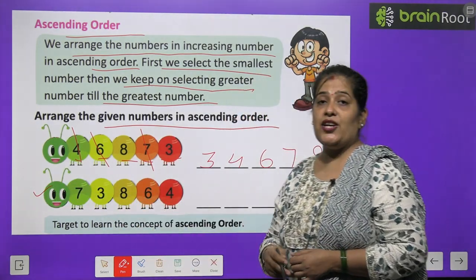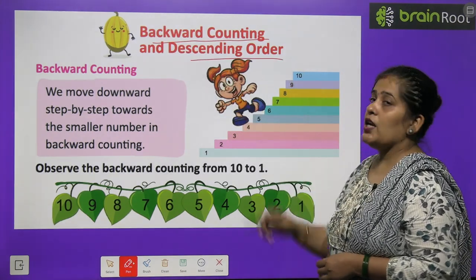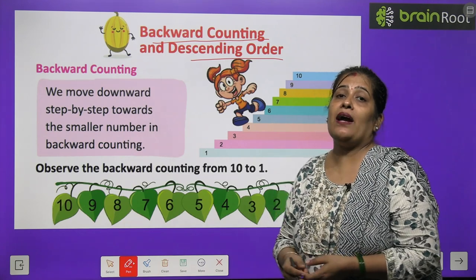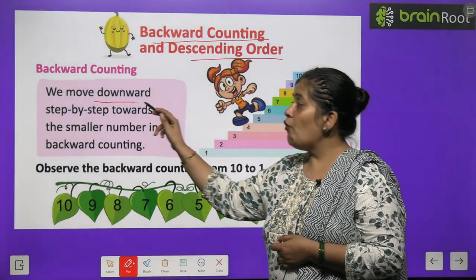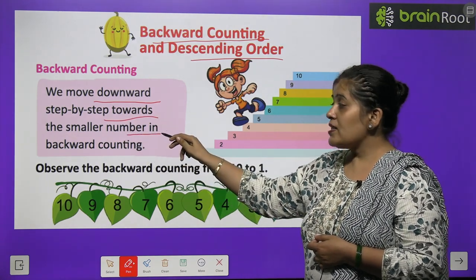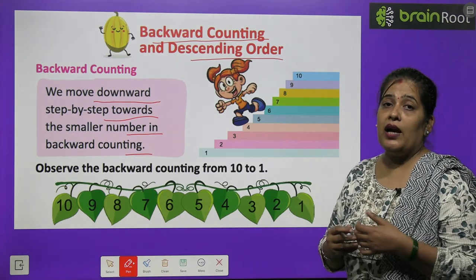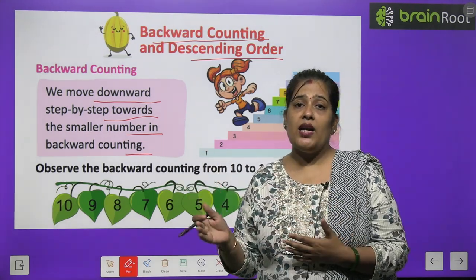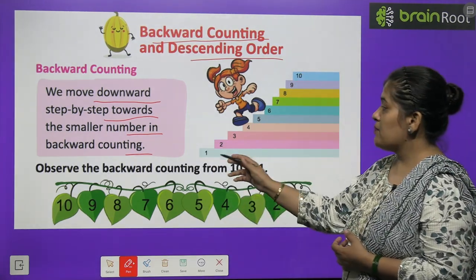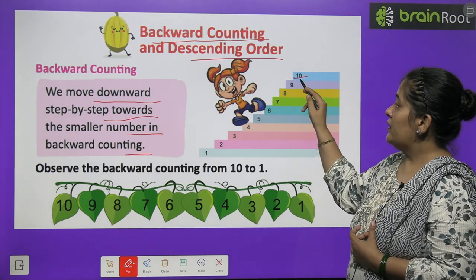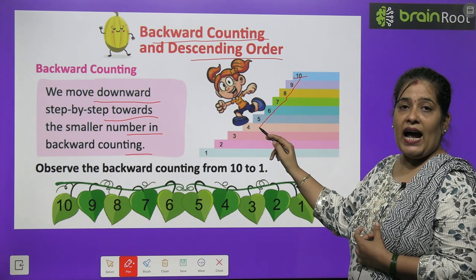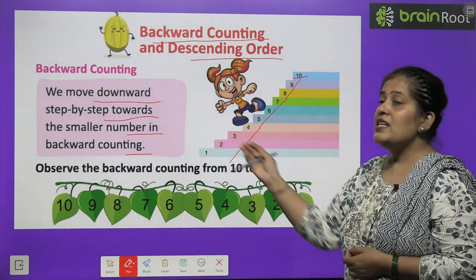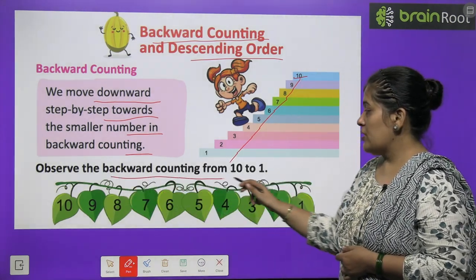The next topic is backward counting and descending order. Backward counting kya hoti hai? We move downward step by step towards the smaller number in backward counting. Hum bade number se dheere dheere chhote number pe aate hain. Observe the backward counting from 10 to 1: 10, 9, 8, 7, 6, 5, 4, 3, 2, and the last one is number 1.